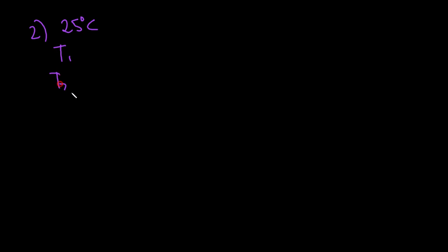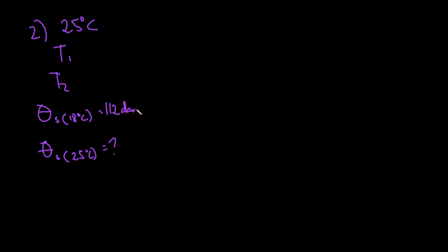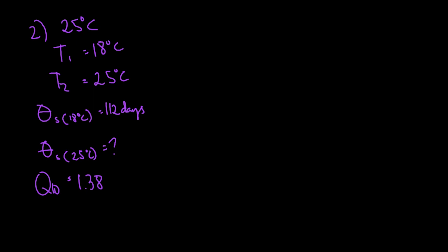For the second storage condition at 25 degrees Celsius, T2 is 25°C and T1 is 18°C. The shelf life at 25°C is unknown and the shelf life at 18°C is 112 days. The difference between the two temperatures is 7 degrees Celsius — not 10 — so we use the first equation.